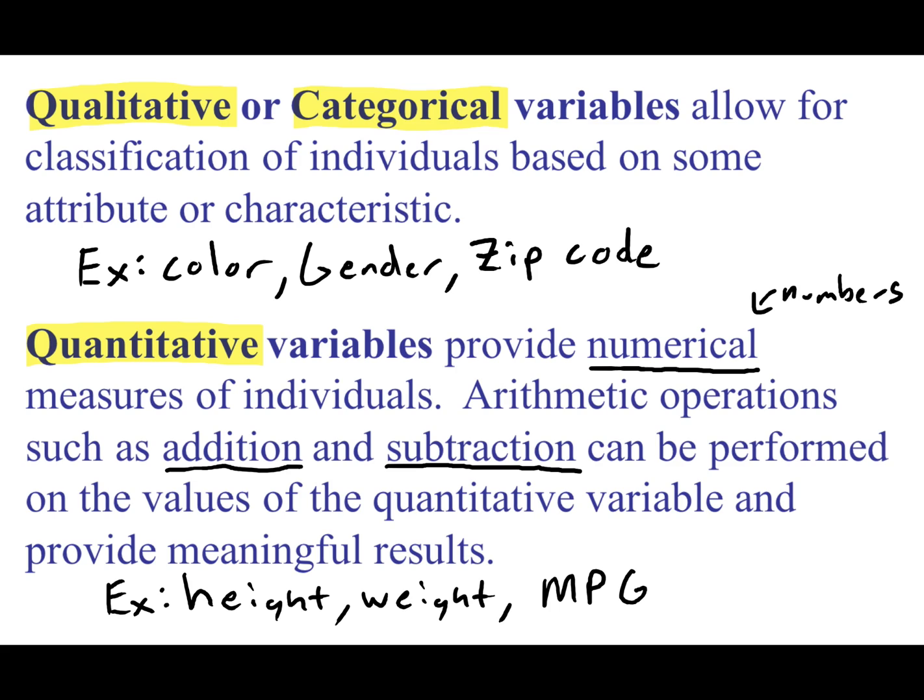If you took a room full of people and you got all their zip codes together and you found the average zip code by adding up all their zip codes and dividing by the number of people in the room, that would be meaningless. A zip code is a number, but it's not a quantitative variable because doing arithmetic with a zip code doesn't give you a meaningful conclusion.